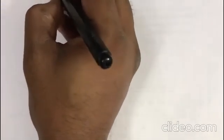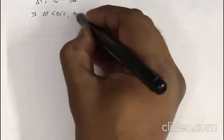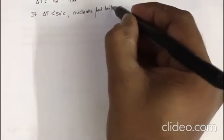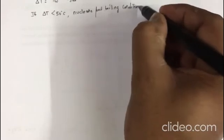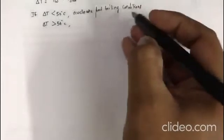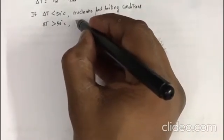Now we have to find the excess temperature ΔT, which is the difference between the wall temperature and the saturation temperature: ΔT = 110 - 100 = 10°C. You have to consider this as nucleate pool boiling conditions.